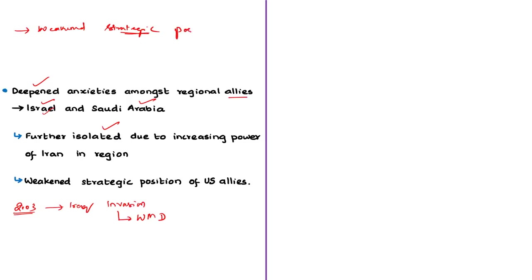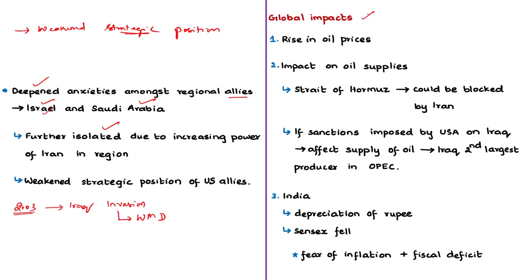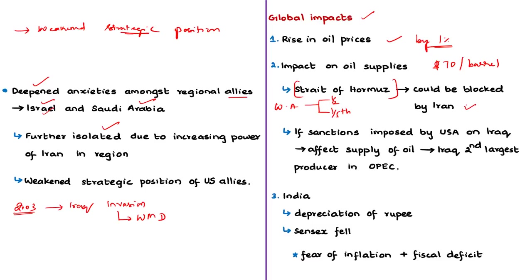These news articles also mention the global impact of the disturbed situation in the Middle East. The first expected impact is the rise in oil prices — Brent crude oil prices jumped by about 1%, now above 70 dollars a barrel. There is also a possible impact on oil supplies, as the West Asia region accounts for nearly half of the world's oil production and about one-fifth of the world's oil shipments passing through the Strait of Hormuz. There is a possibility that Iran might block the Strait of Hormuz, which would cut off oil supply and further increase prices.